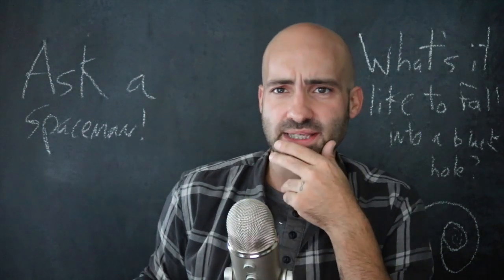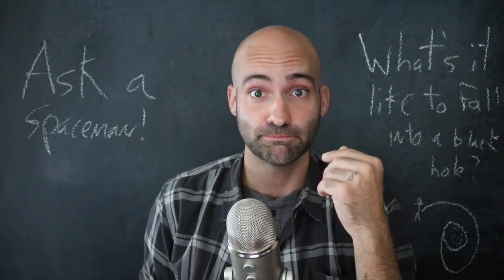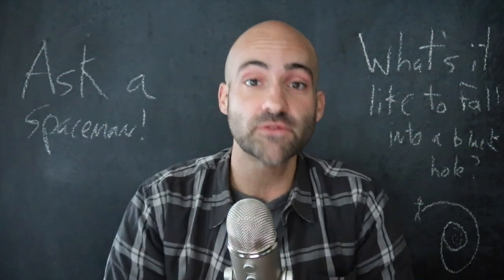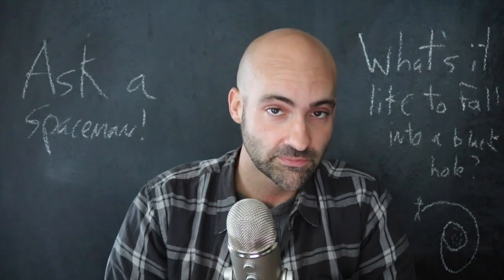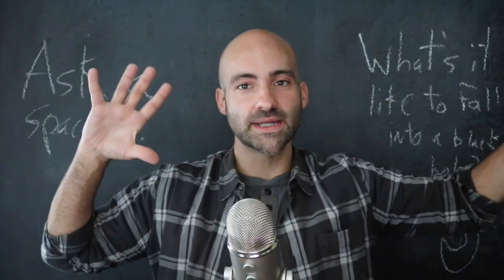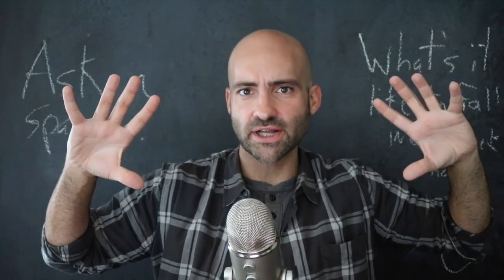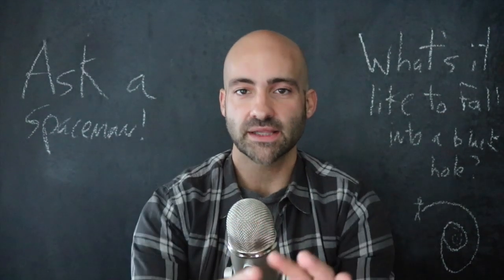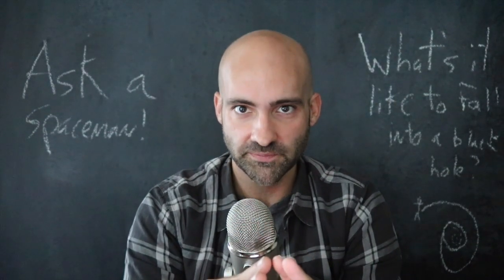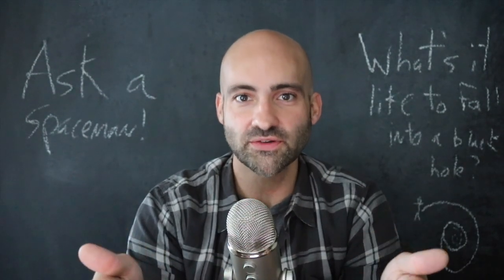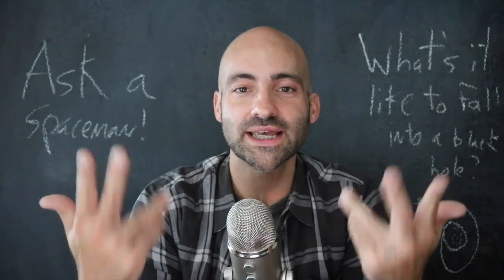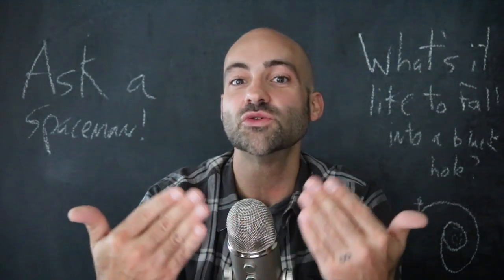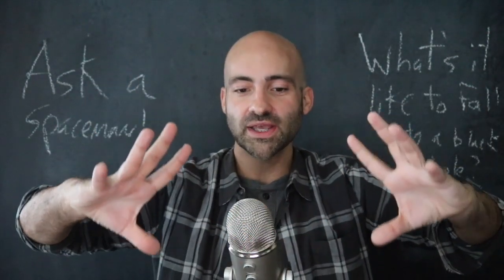For a giant black hole like the ones at the centers of galaxies, it takes only a few seconds. The event horizon — the boundary you crossed — is in your past; the singularity is in your future, and you will hit it. All that material from the dead star collapsed to the singularity a long time ago. Just like you don't know what the future looks like until you get there, you won't know what the singularity looks like until you reach it.